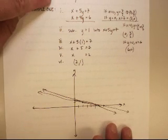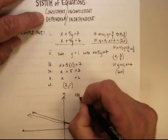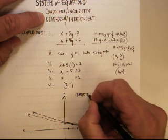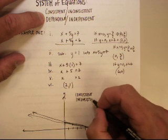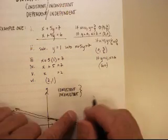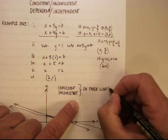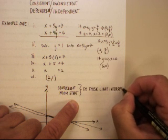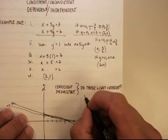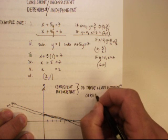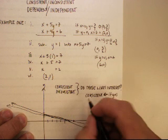Now consistent and inconsistent describes the intersection. Consistent and inconsistent answer the question, do these lines intersect? If they do, if there's any crossover at all, they're called consistent. If they do not, they're inconsistent.